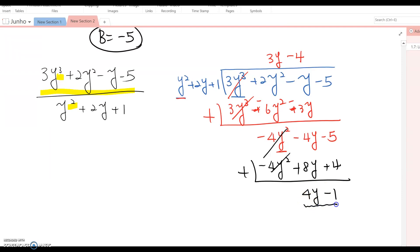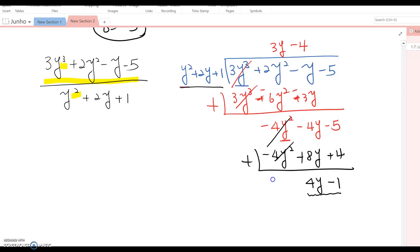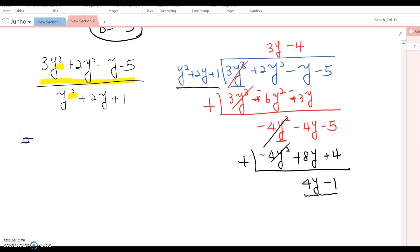This last term is smaller than the divisor, so we can write the answer as 3y - 4 plus (4y - 1)/(y² + 2y + 1). The quotient is already done, so we'll find the partial fraction for the remainder part.